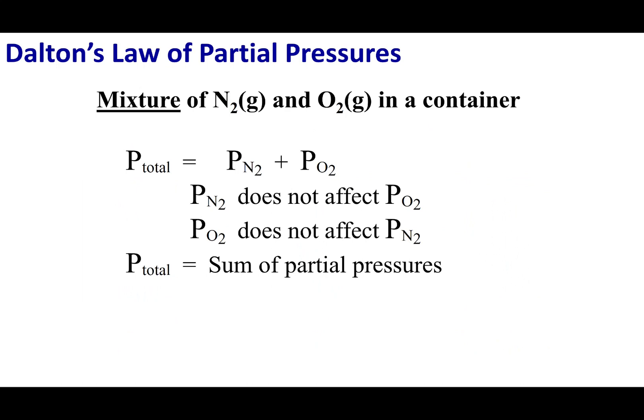If those two gases were nitrogen and oxygen, the total pressure would be the partial pressure of nitrogen plus the partial pressure of oxygen. The key take-home message from Dalton is that nitrogen's partial pressure does not affect oxygen's partial pressure and vice versa. When these gases are colliding against the wall, we assume they do not block each other's collisions, so each maintains its own partial pressure — which is why the total pressure is the sum of the partial pressures.